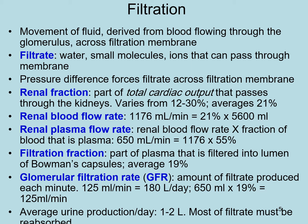The part of total cardiac output that passes through the kidneys varies from 12 to 30 percent, with an average of 21 percent. This means about 21% of the blood pumped by the heart goes to the kidneys — a significant proportion. This allows us to calculate the glomerular filtration rate.